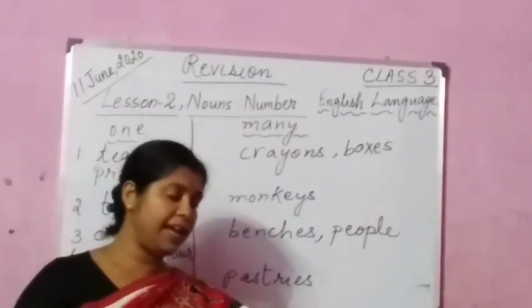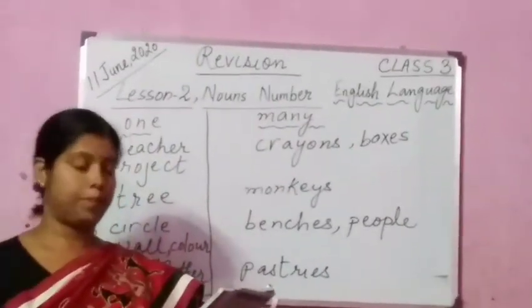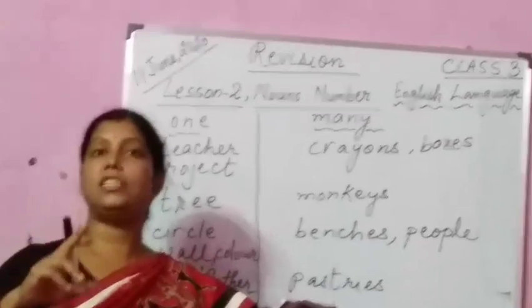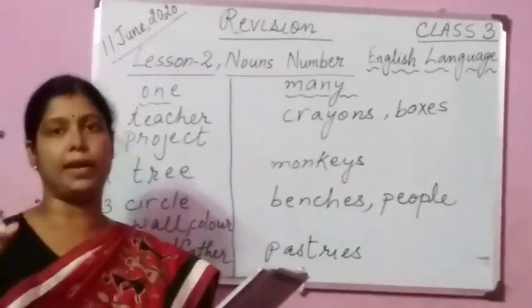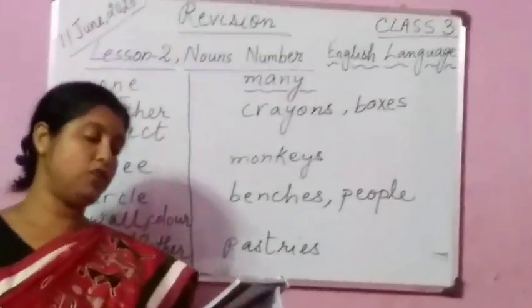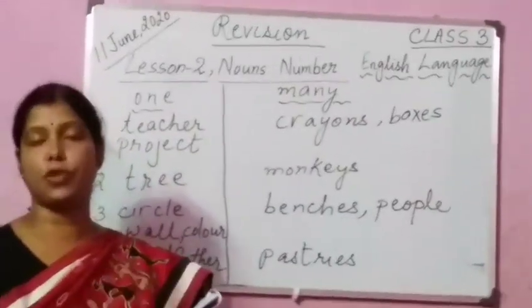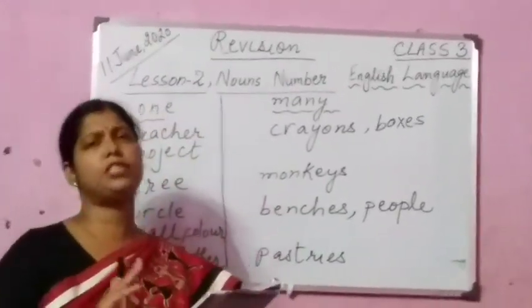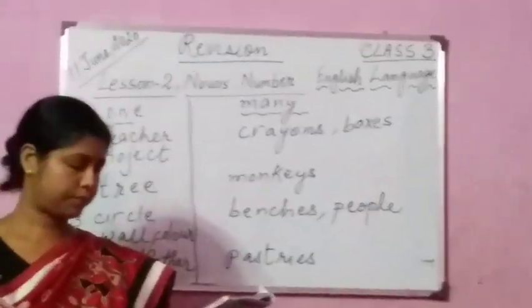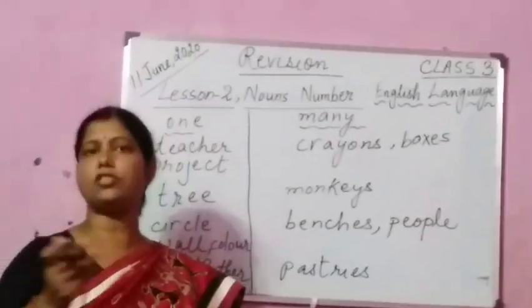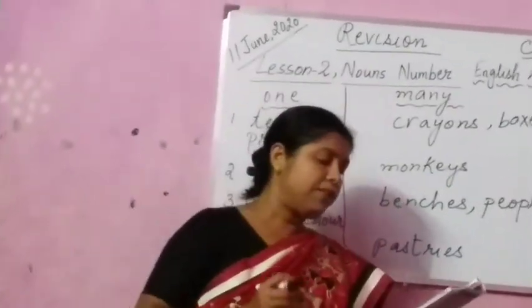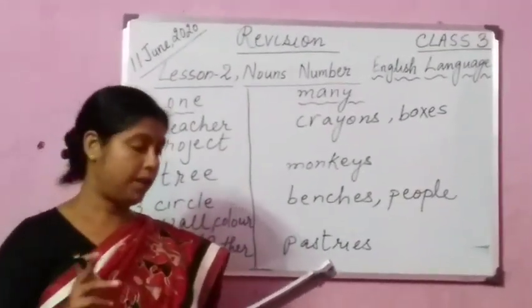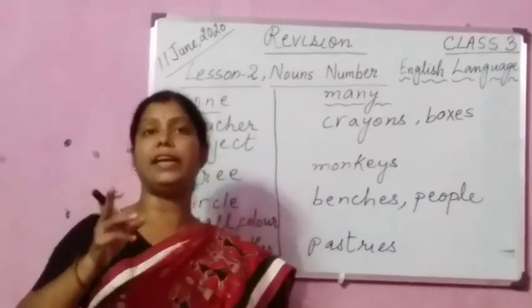Number 2: she ate an egg and a berry — she ate two eggs and eight berries. Eggs: E-G-G-S; berries: B-E-R-R-I-E-S. Number 3: do you have the video from yesterday — do you have the videos from yesterday? The spelling of videos is V-I-D-E-O-S. Number 4: his wife is wearing a pretty dress — their wives, W-I-V-E-S, are wearing pretty dresses, D-R-E-S-S-E-S.